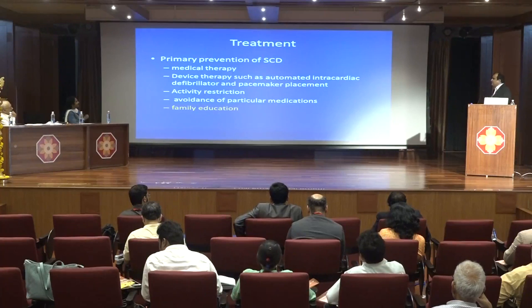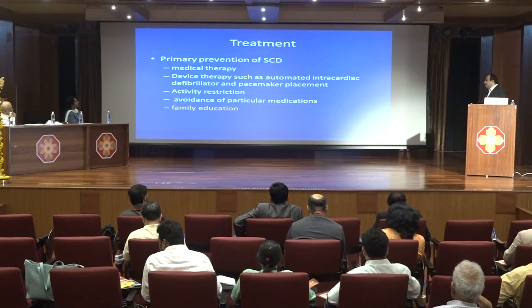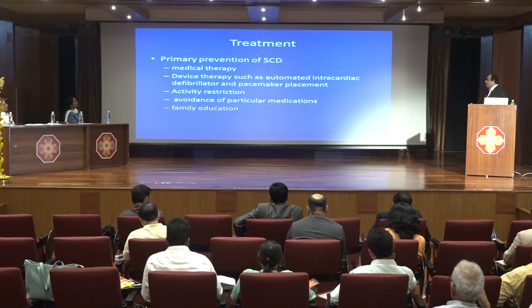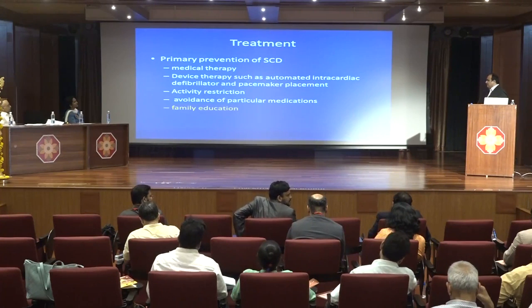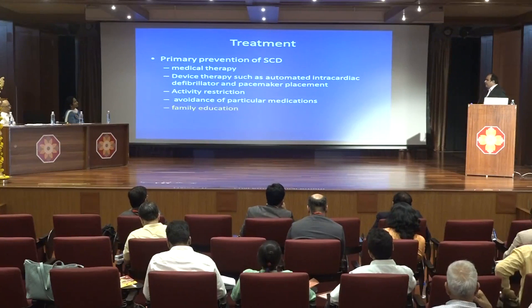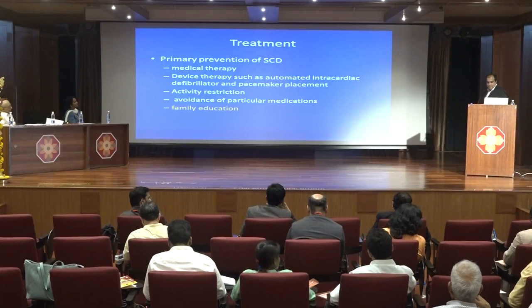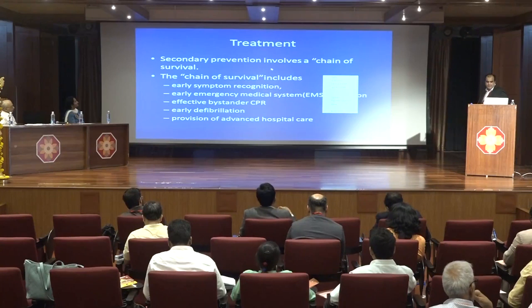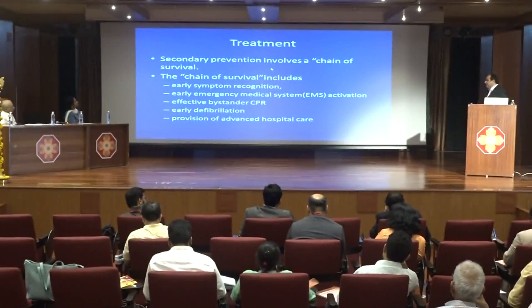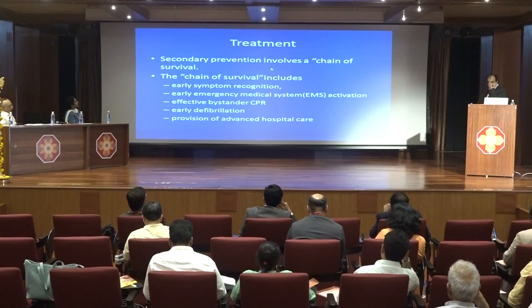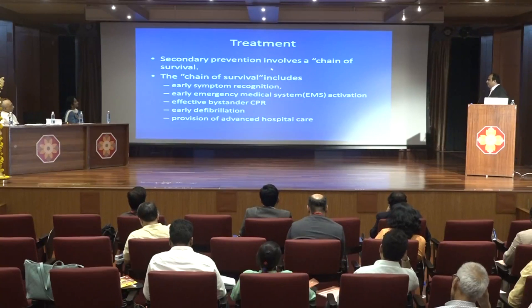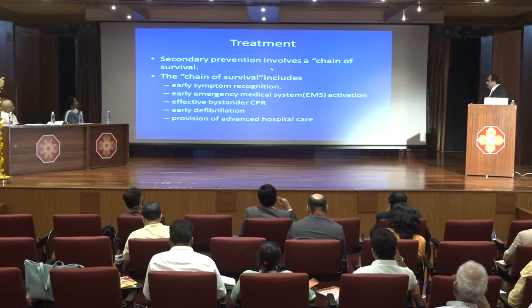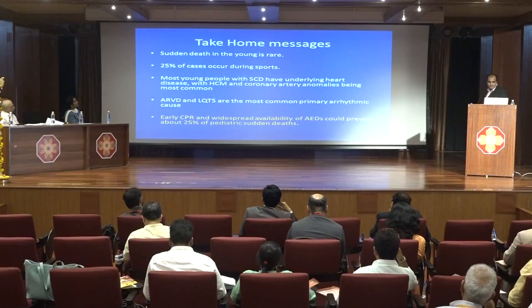Primary prevention includes medical therapy for different arrhythmias, timely placement of devices like ICD or pacemaker, activity restriction after diagnosis (as in aortic stenosis), avoidance of particular medications (as in long QT syndrome), and most importantly, family education including CPR training and family screening. Secondary prevention involves the chain of survival: early symptom recognition, early EMS activation, effective standard CPR, early defibrillation, and provision of advanced hospital care.